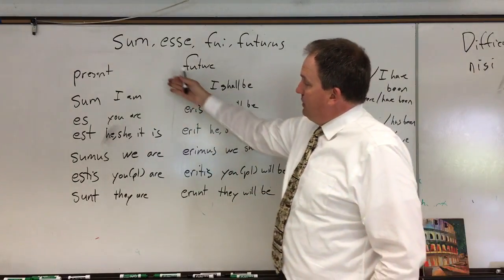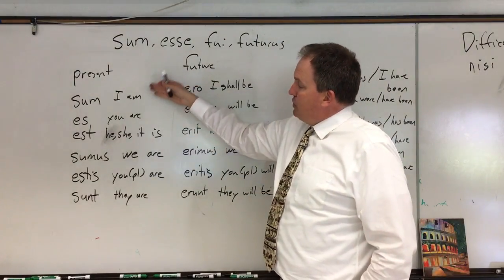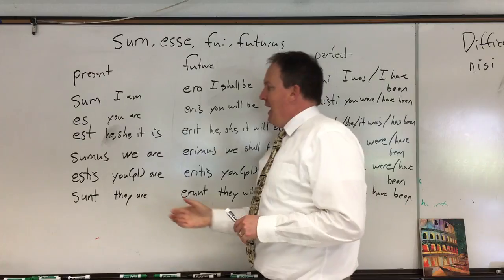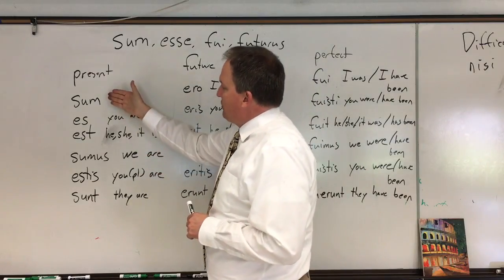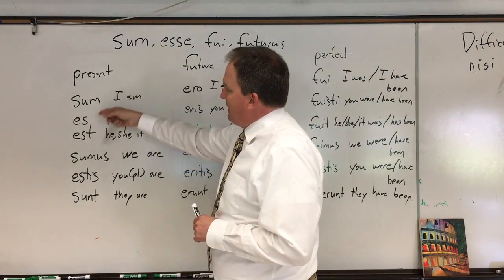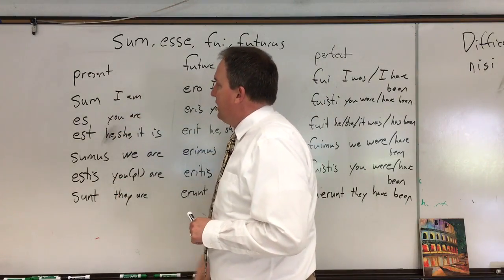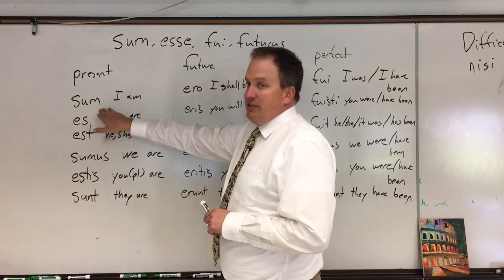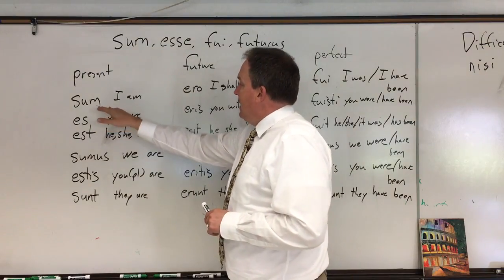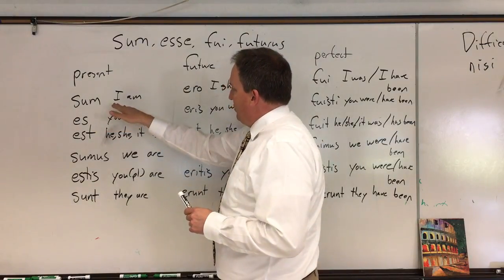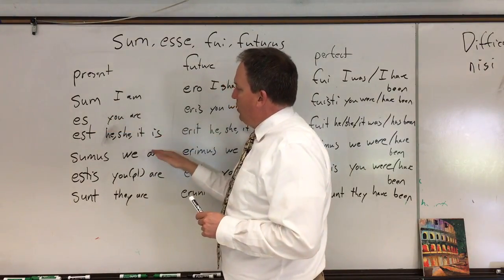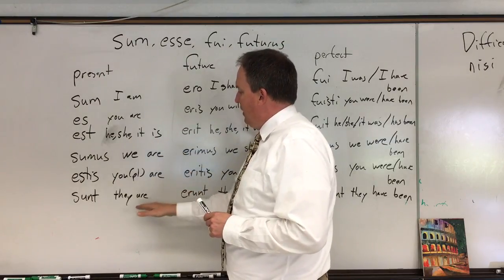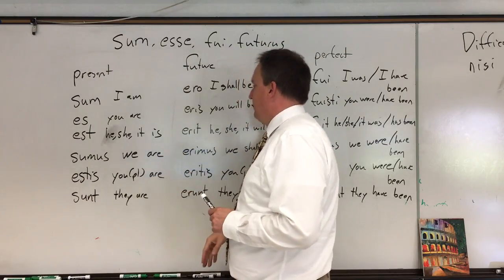Present tense of sum: sum, es, est, sumus, estis, sunt. It has some of the endings, of course, that we all expect — s, t, mus, tis, nt — using the alternate m instead of o here, but we should all be familiar with this. I am, you are, he/she/it is, we are, you plural are, and they are.